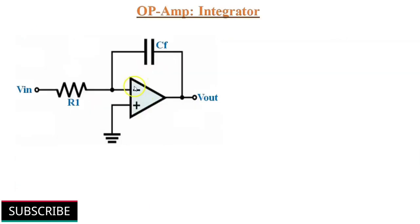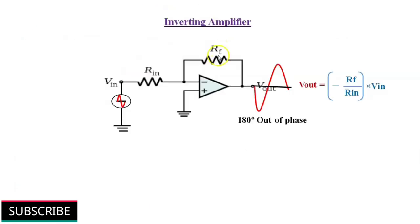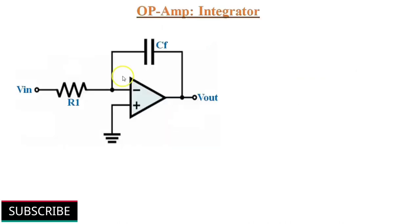The ideal Op-Amp Integrator circuit is shown here. An Integrator is basically an Inverting Amplifier, where we replace the feedback resistor with a reactive element or frequency dependent element such as a capacitor. Now we have an RC network connected across the feedback path.